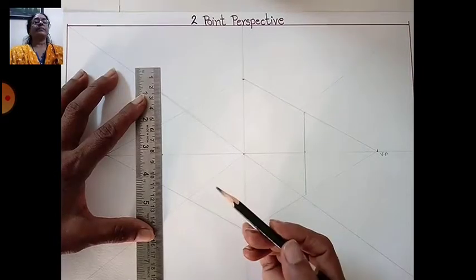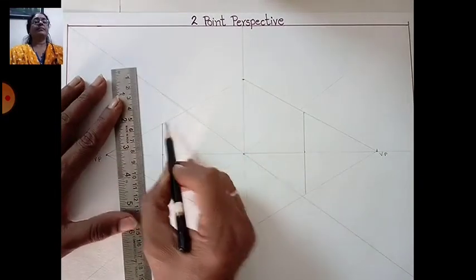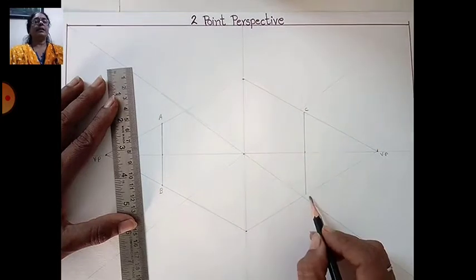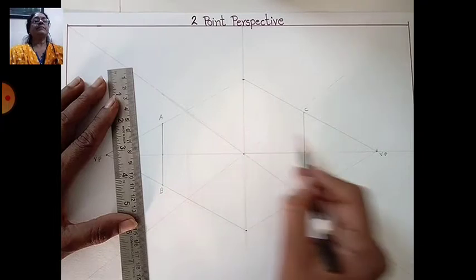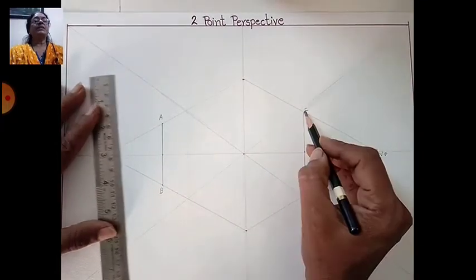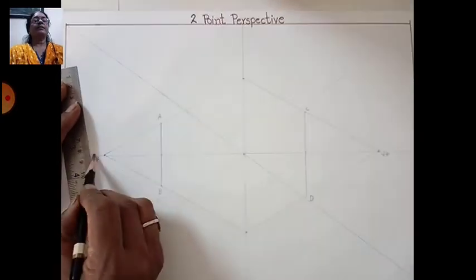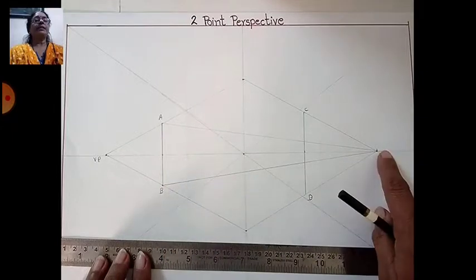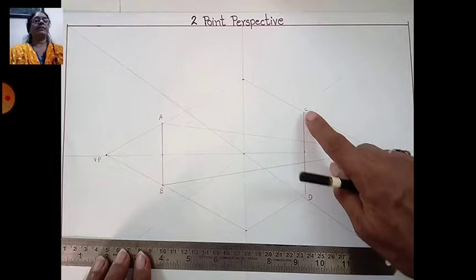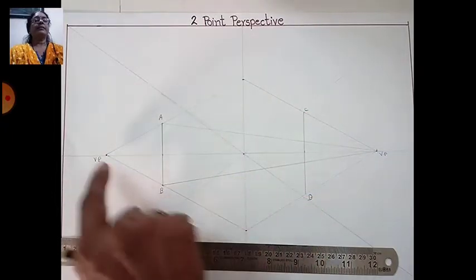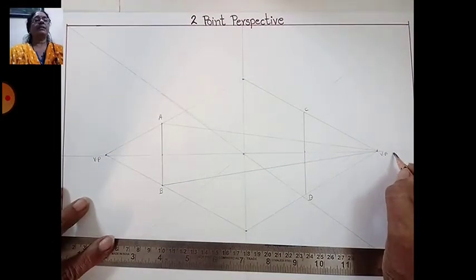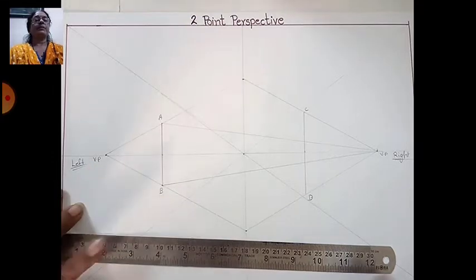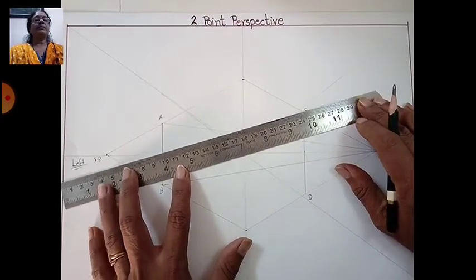Here also, 6 and 8 centimeter. Make points A, B, C, and D — make 4 points like this. See the opposite side: A point will join to the right side vanishing point, and B point also to the right side vanishing point. C and D join to the left side vanishing point. This is the right side vanishing point, and here also the left side vanishing point — join the opposite side.